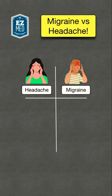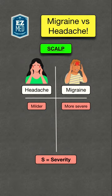S stands for severity. General headaches tend to be more mild while migraines tend to be more severe and debilitating.